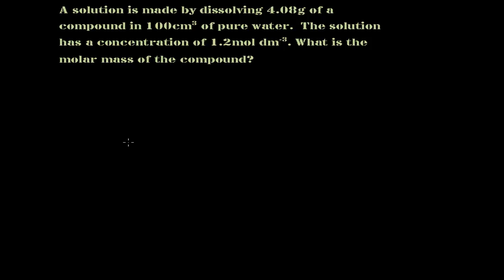You may notice there's no periodic table for this question because we don't need to deal with elements here. We just need to present the molar mass as a number. Okay, let me read out the question. A solution is made by dissolving 4.08 grams of a compound in 100 centimeters cubed of pure water. The solution has a concentration of 1.2 moles per dm³. What is the molar mass of the compound?